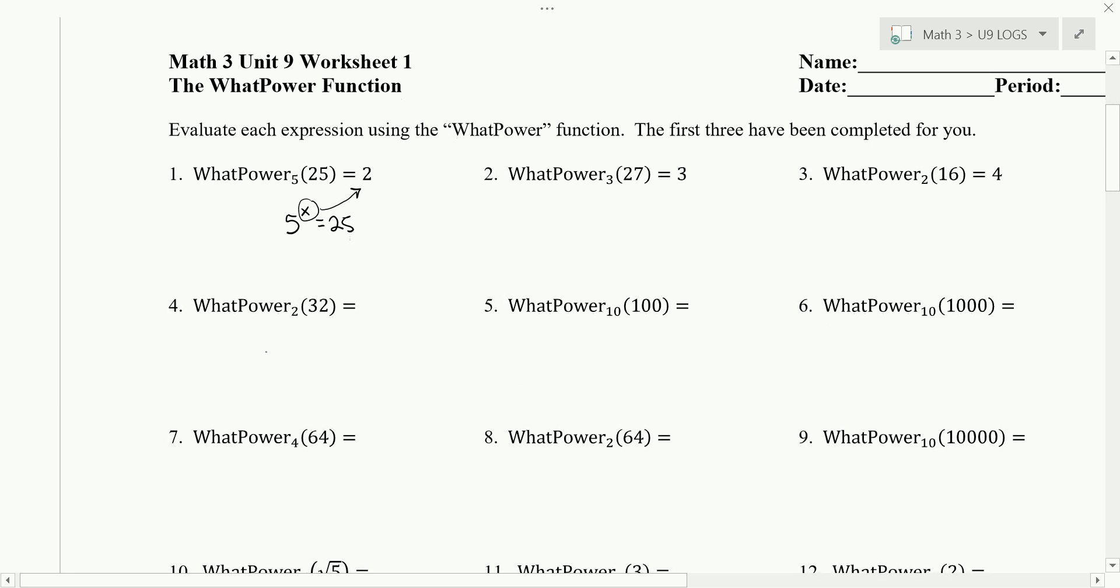So on number 4, that's asking 2 to what power is 32. And if you consider the powers of 2, 2 to the first, 2 to the second, 2 to the third, 2 to the fourth, 2 to the fifth, you find that 2 to the fifth power is 32. So my answer is going to be 5.